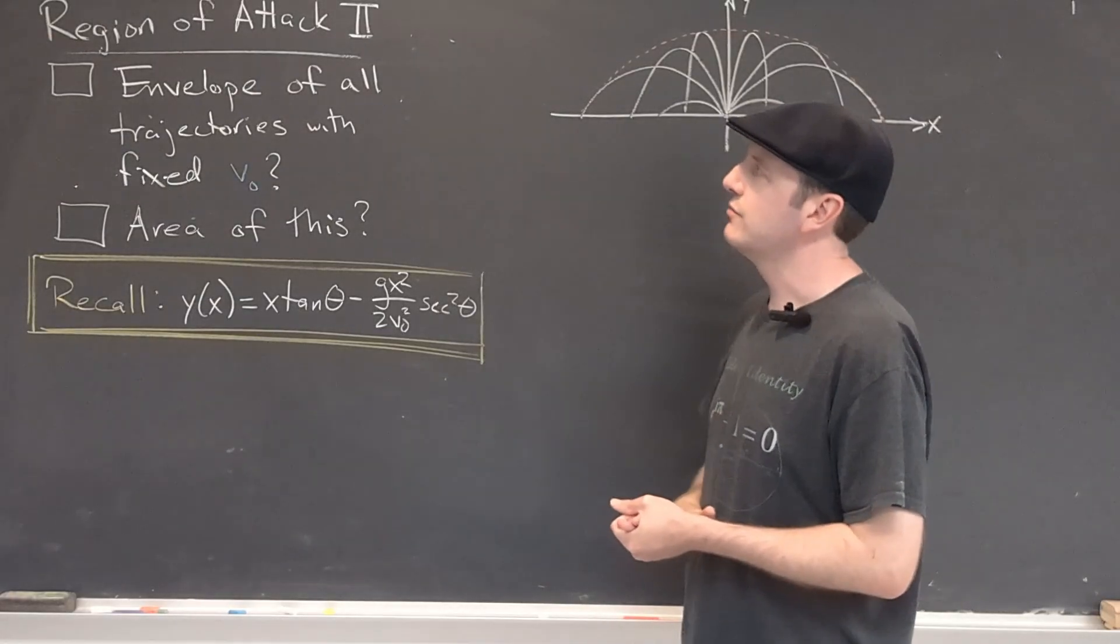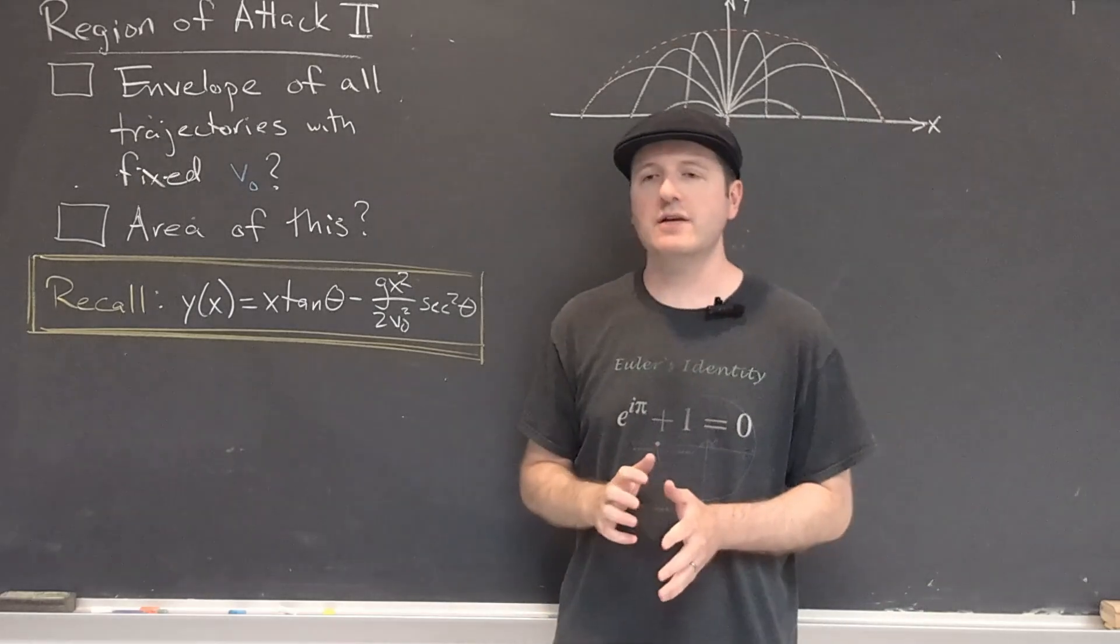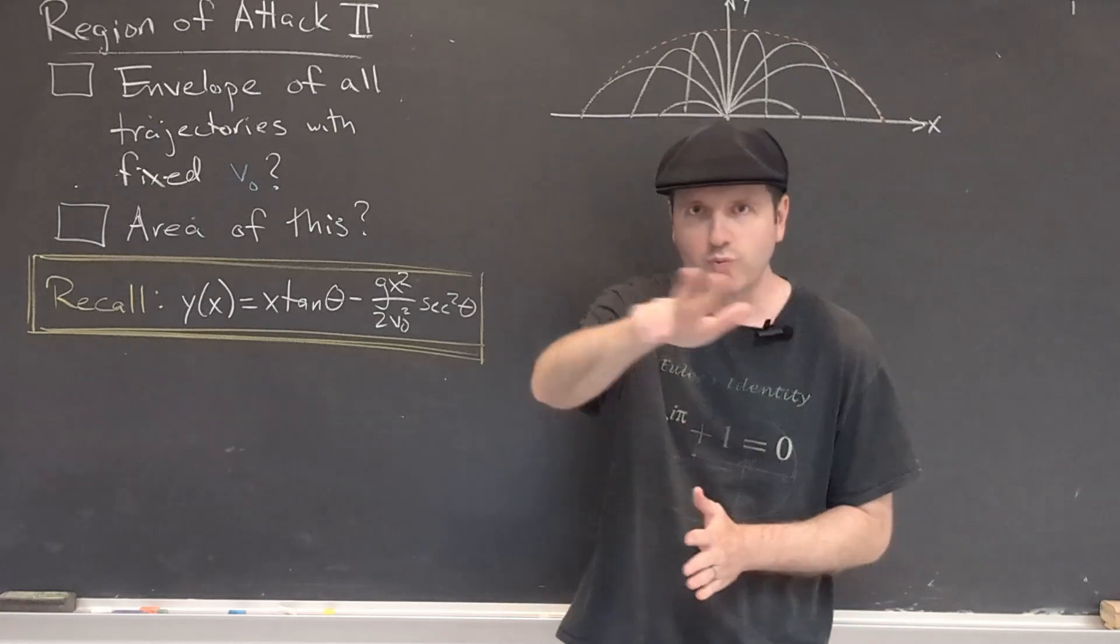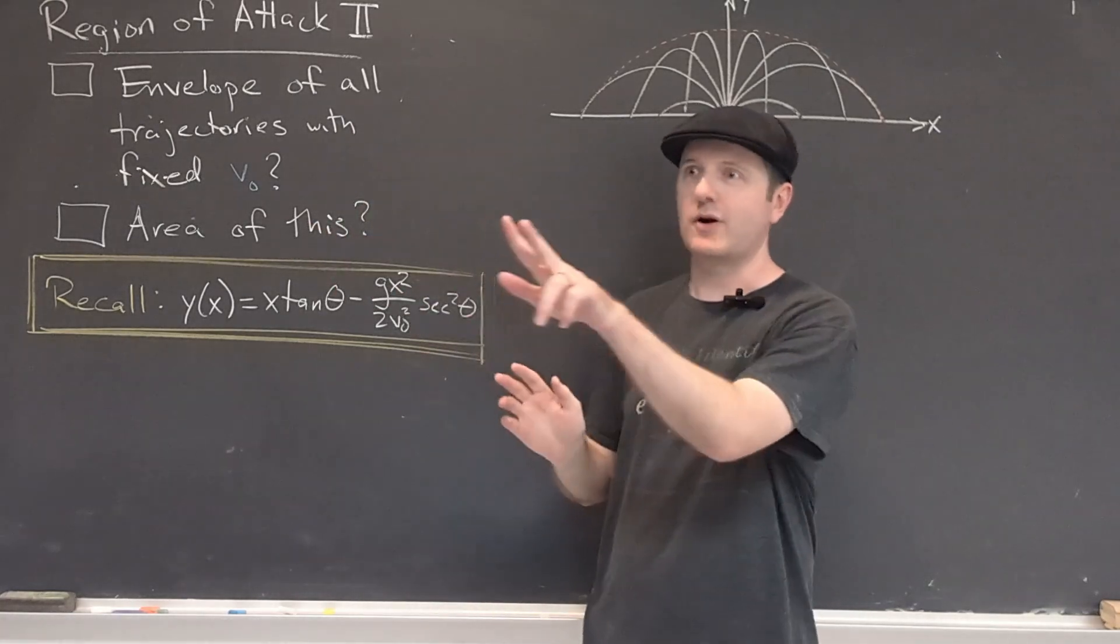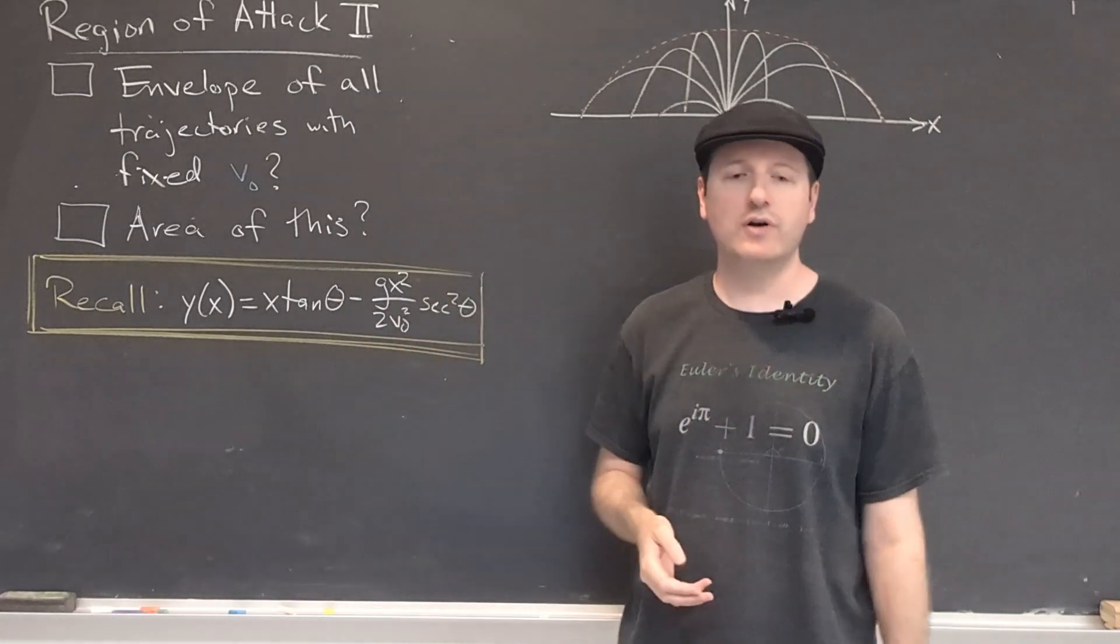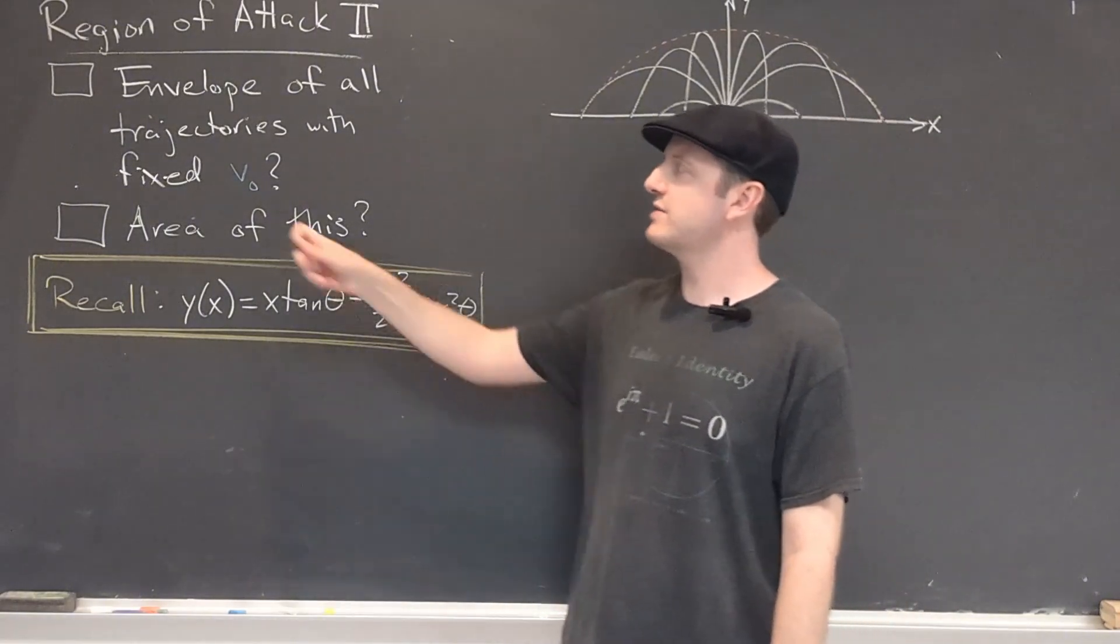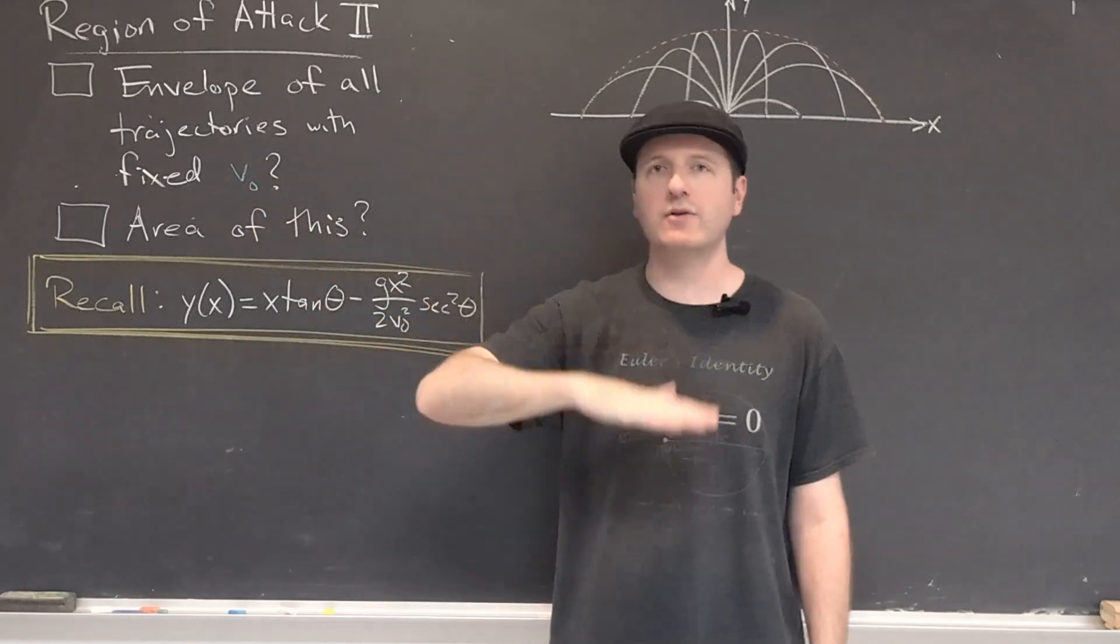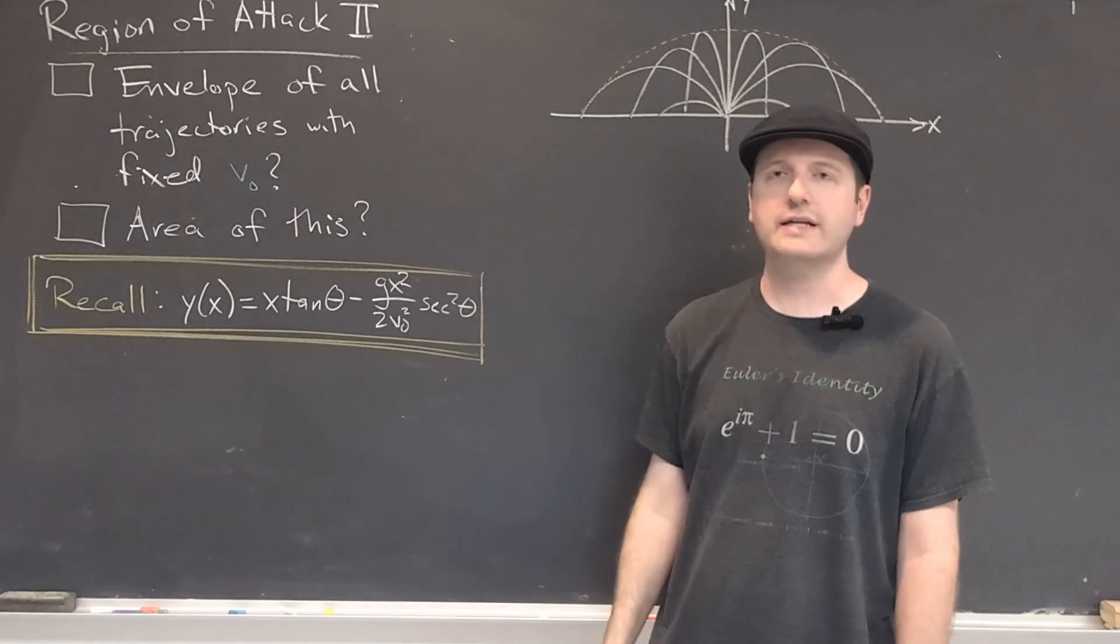Okay, for today, I thought we'd return to our idea of the region of attack. This time, instead of fixing a particular theta and swinging around in an azimuthal direction, our fixed angle cannon, and seeing what the total area or total volume of space that we could reach is, let's try fixing the launch speed of our projectile, but allowing many different angles of launch, anything from zero all the way over to 180 degrees.